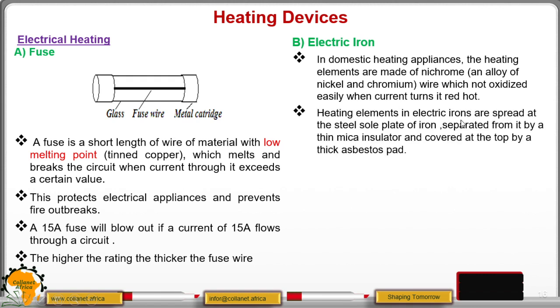Now, the heating element in iron boxes are spread on the steel sole plate. You know what is an electric iron? It has a steel sole plate. So, the heating elements are spread there. And they are separated from it by a thin mica insulator. And this mica insulator will prevent from that heat from passing from the lower part to the other part of the iron box.